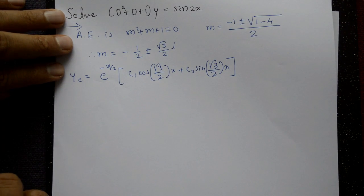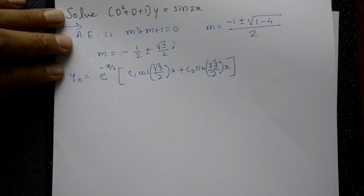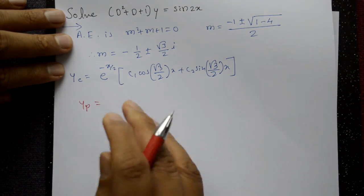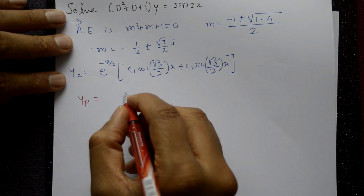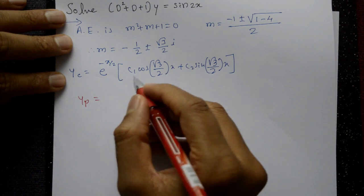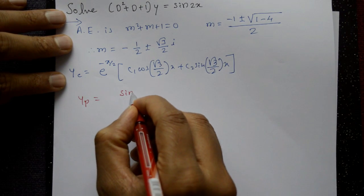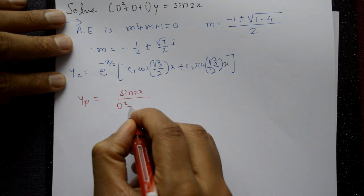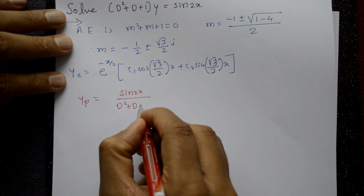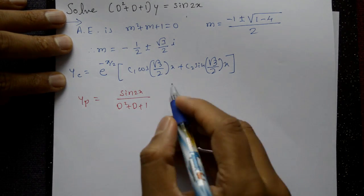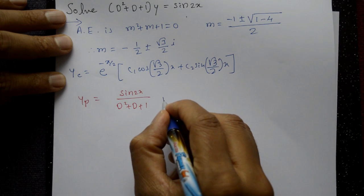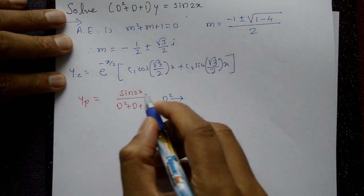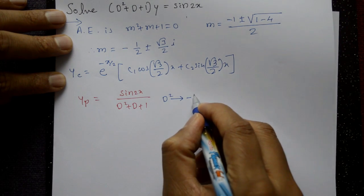Now, the particular integral yp = sin2x / f(D) = sin2x / (D² + D + 1). Applying D² = −a² where a = 2, so D² = −4. This gives sin2x / (−4 + D + 1).